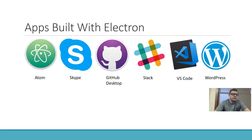I think this is an eye-opener when I talk to people about what is possible with Electron and what it's currently being used for. VS Code is a super powerful IDE. Slack — you can go cross-platform with all of that. And Atom was the original Electron project that ended up being a success, and they went open source with it so that others could use it.